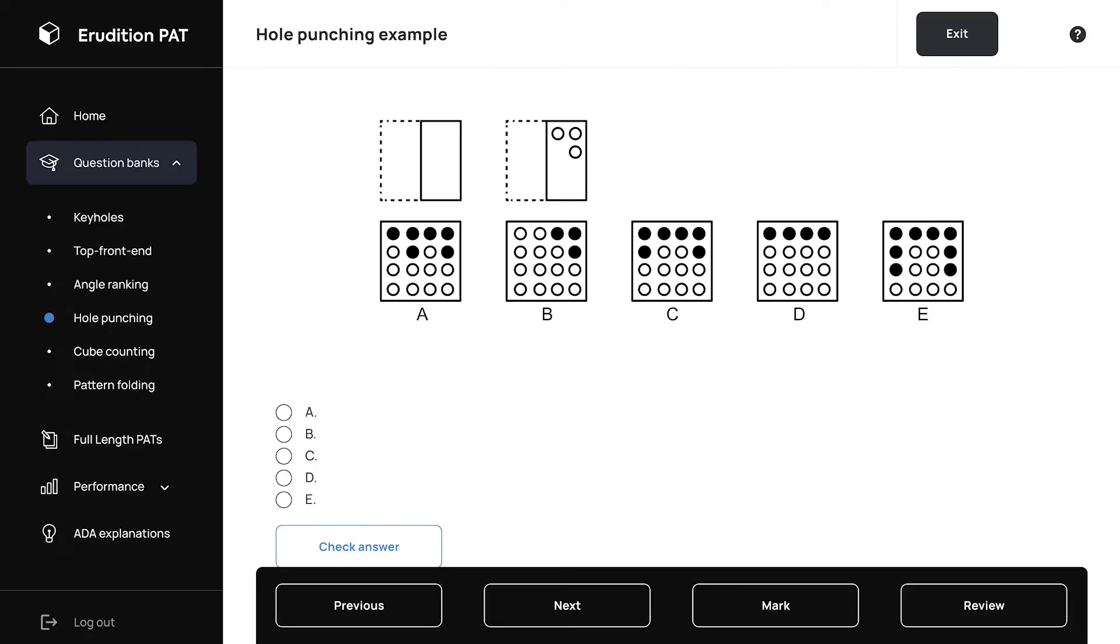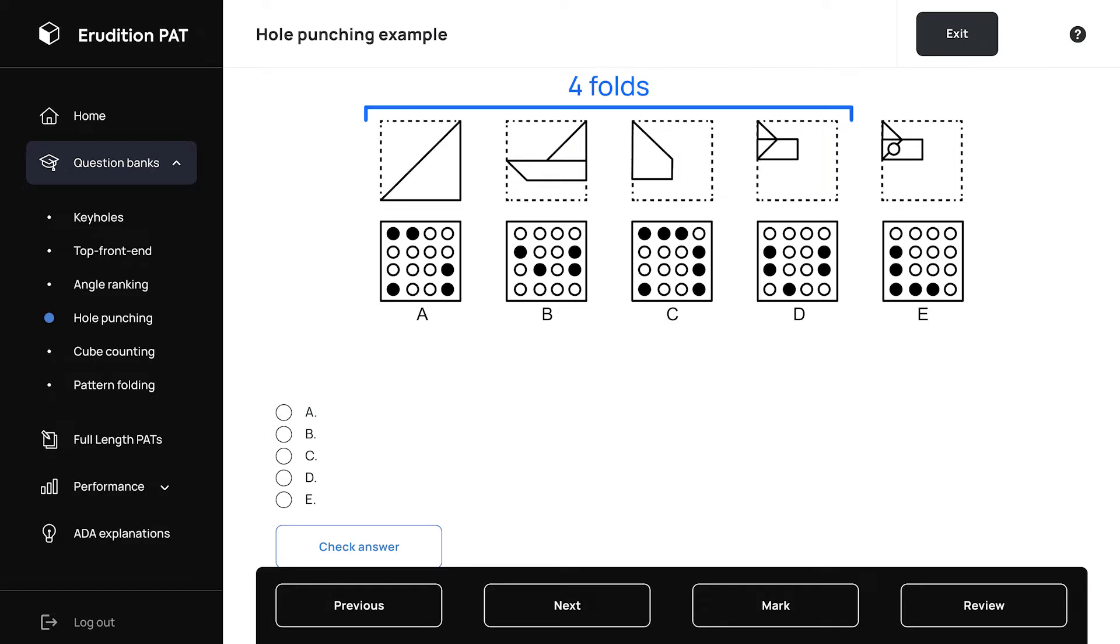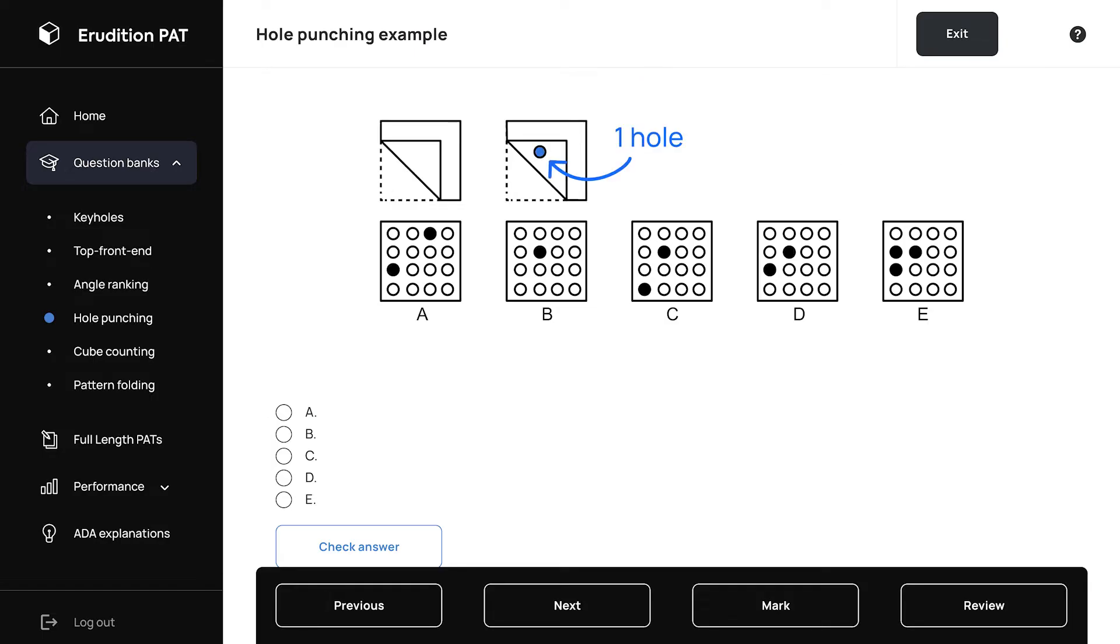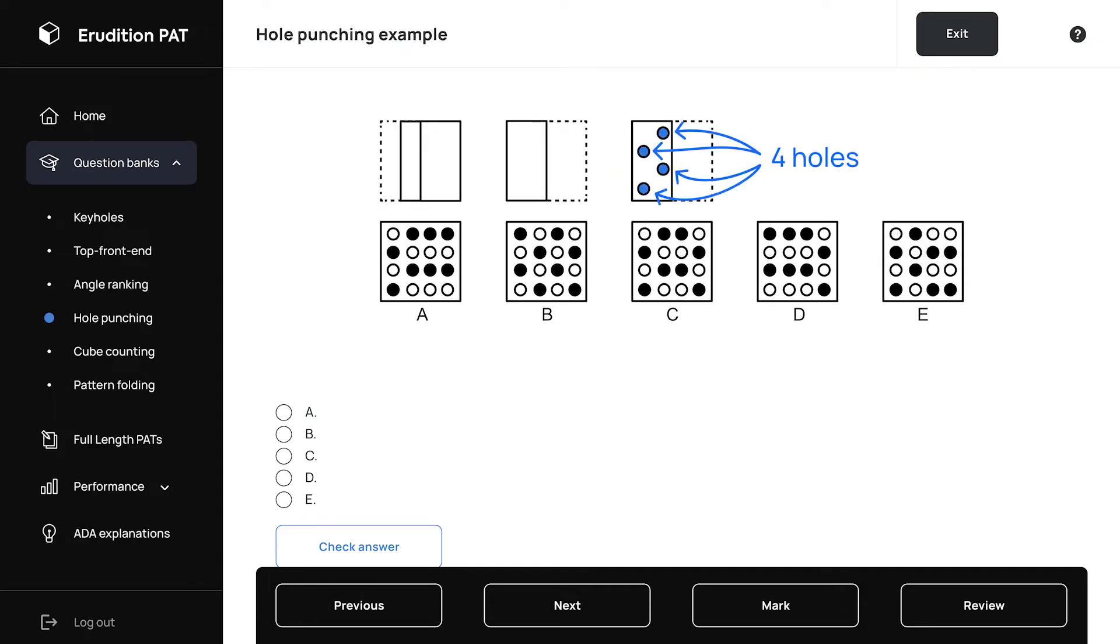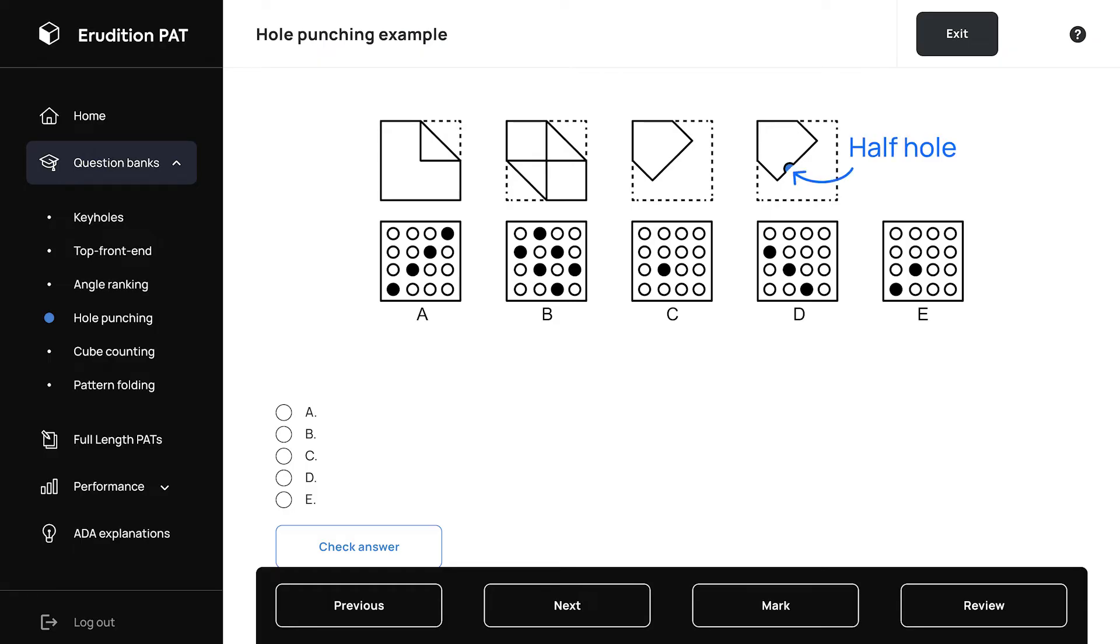These problems can have one or more steps all the way up to four folding steps before the hole punch. In addition, while they also have just one hole punch at the end, they could end in two or more hole punches. These problems can also include half hole punches, where there's a hole punched right on the edge or the crease of a fold so that it only punches half a hole. And we'll also talk about these in more detail in a later video that's part of our PAT course.